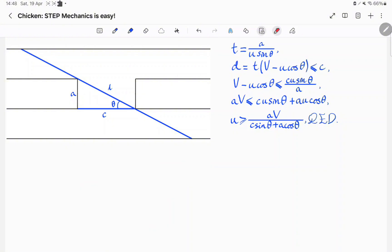Now we'll look at the time taken for the chicken to travel between this point here and this point here. This time T is going to be equal to A over U sine theta. That is the distance across the road over the speed of the chicken across the road. The horizontal distance traveled by the chicken in this time is equal to T of V take away U cosine theta.